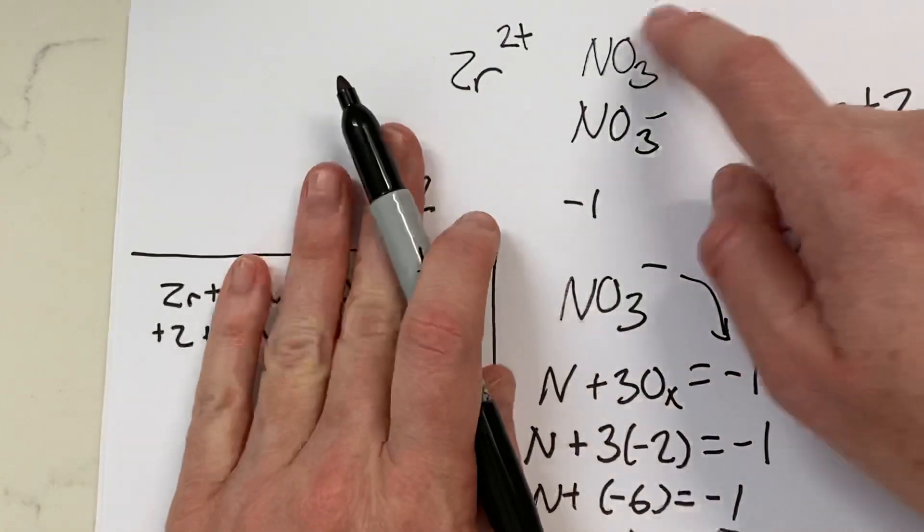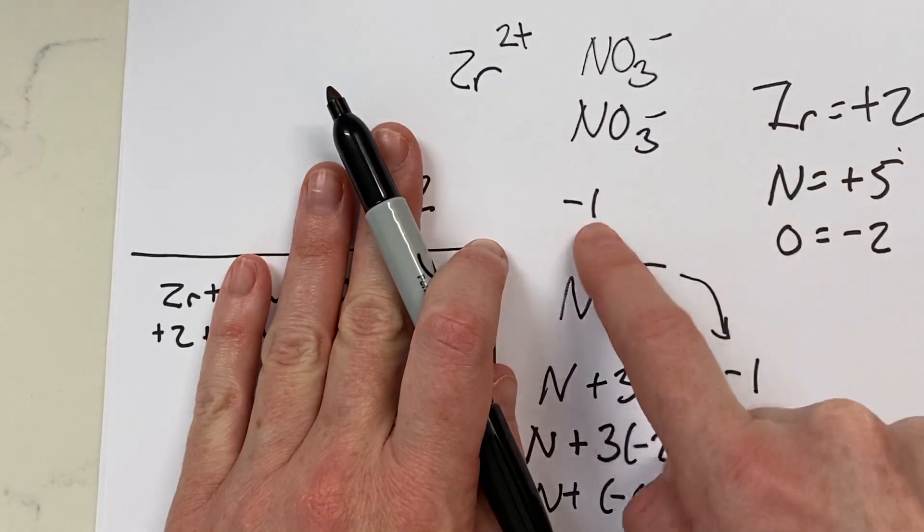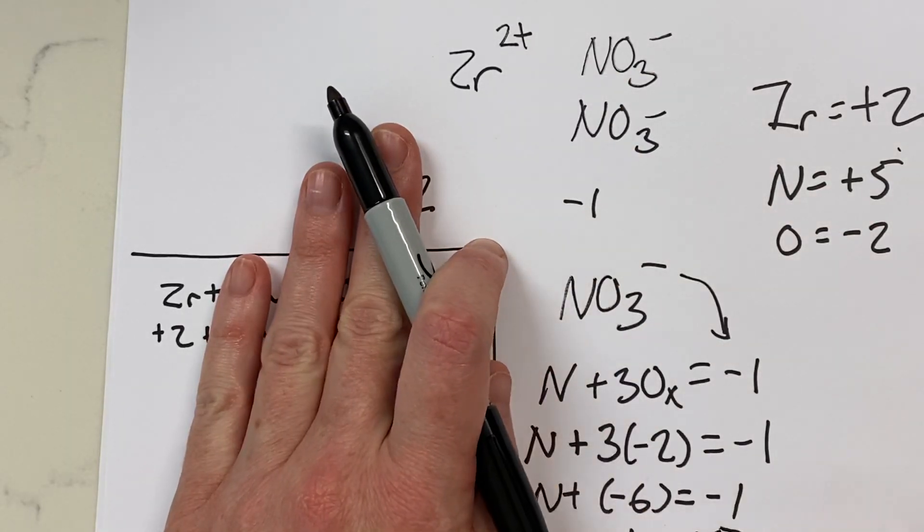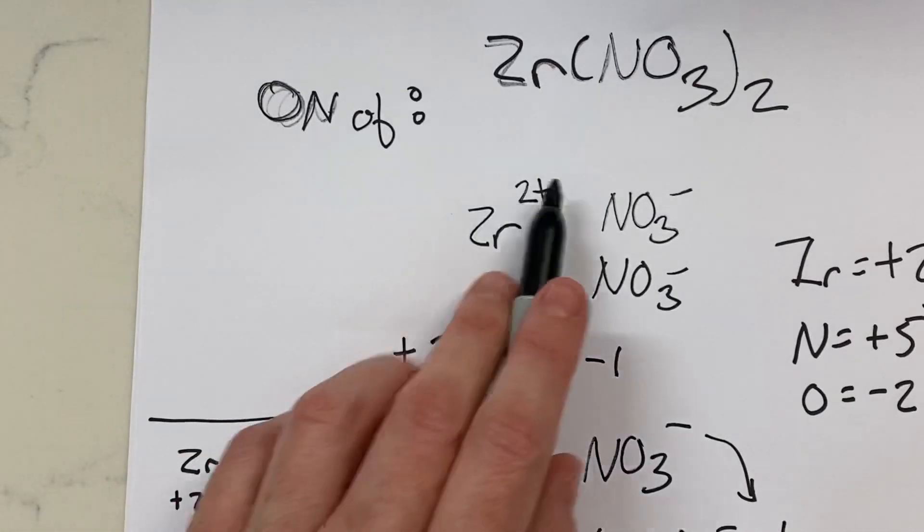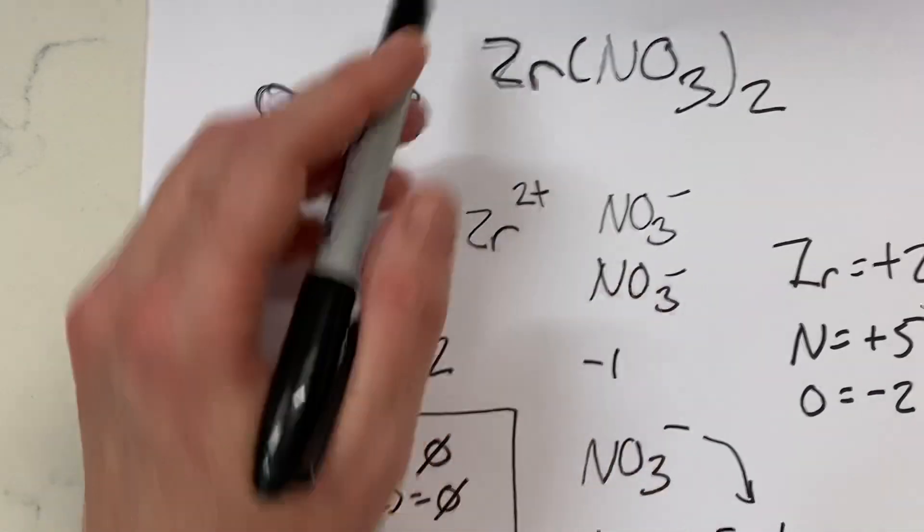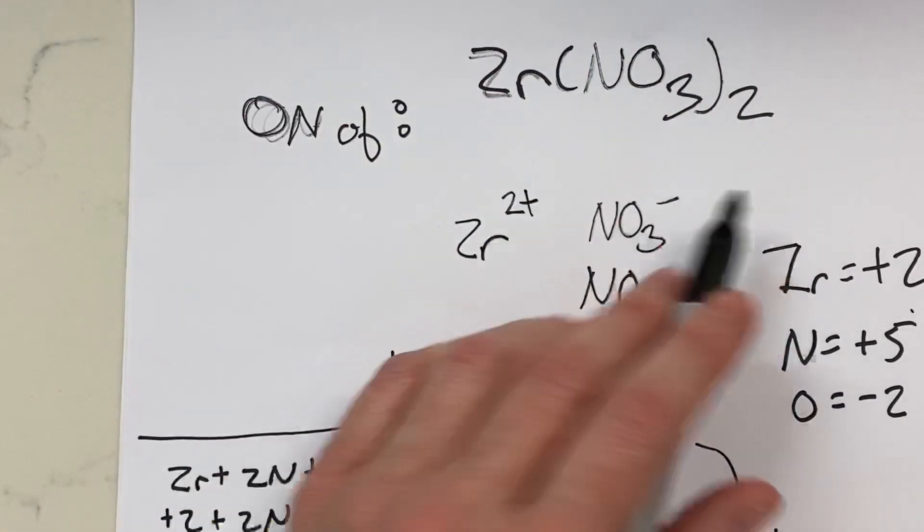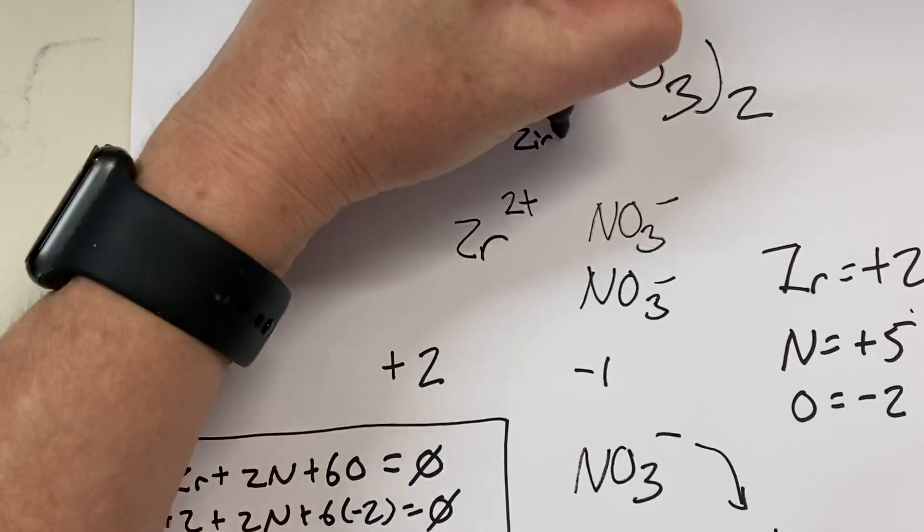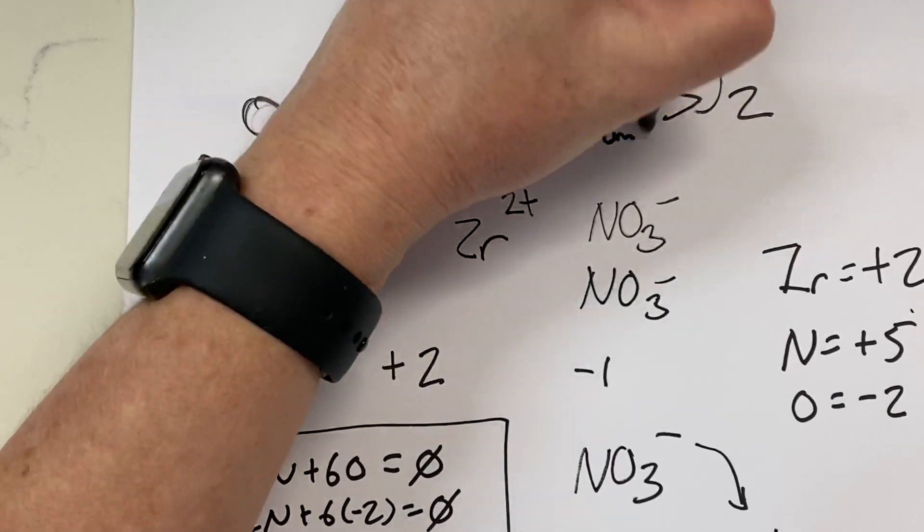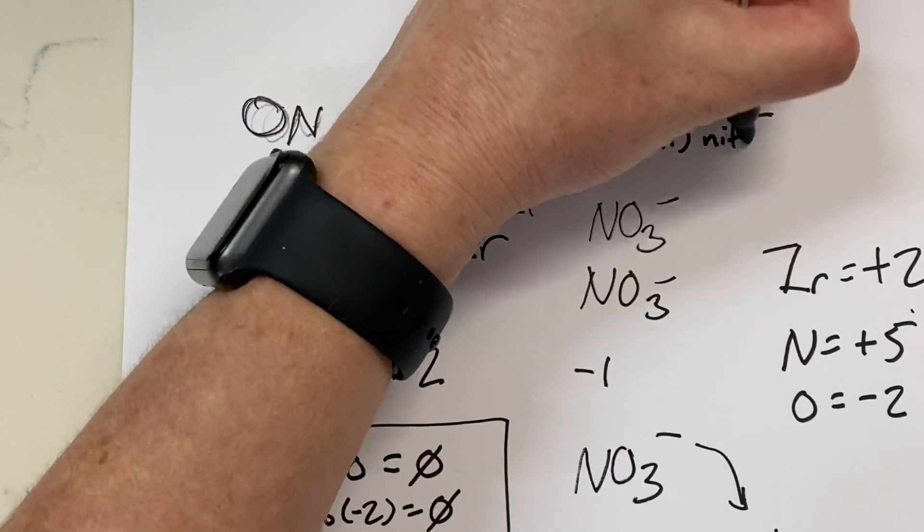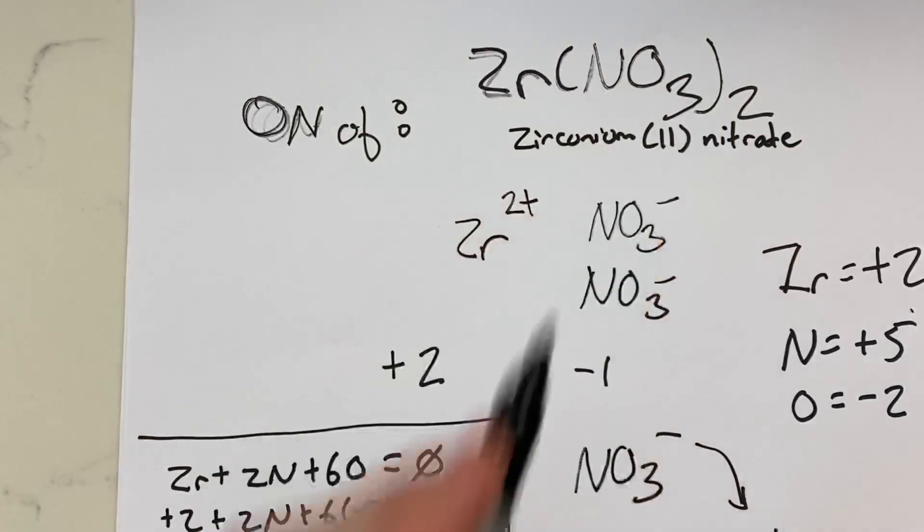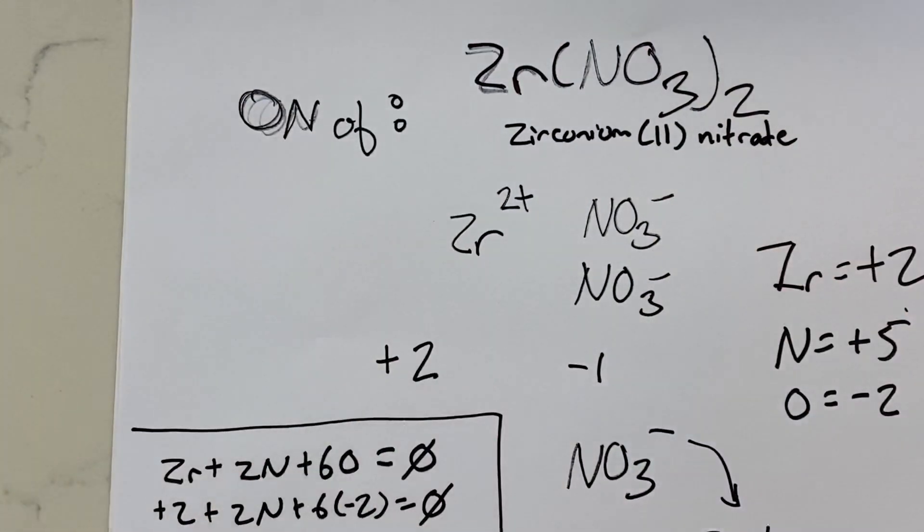So either one of these, but the best way to do it is look at just the nitrate, figure it out algebraically. And we already knew zirconium was 2 plus, because this is zirconium(II) nitrate written like this. And that zirconium had to have a 2 plus charge to cancel out those 2 nitrates.